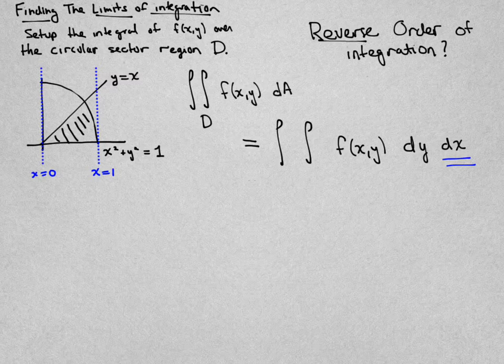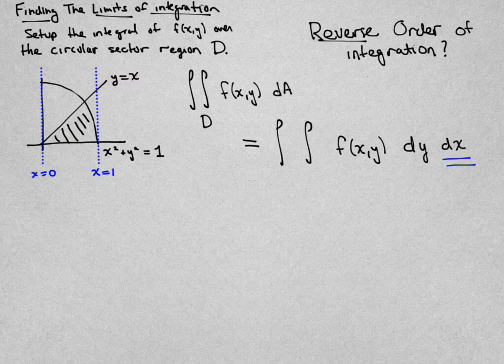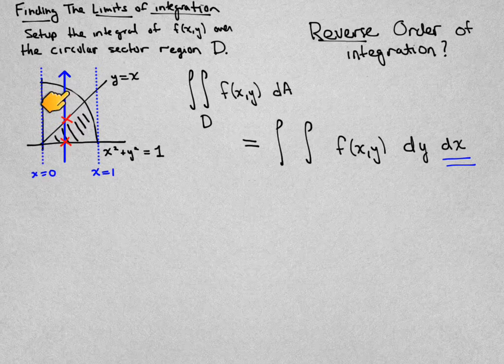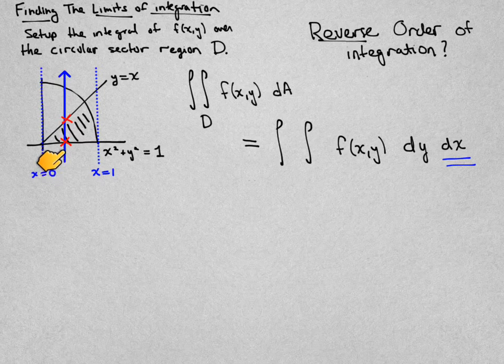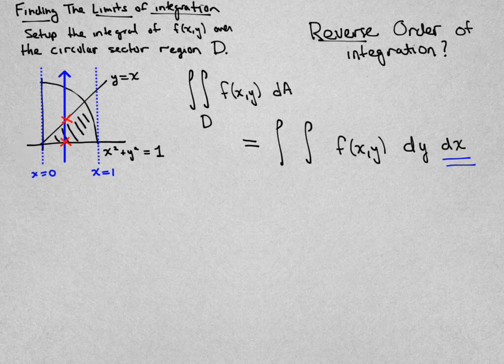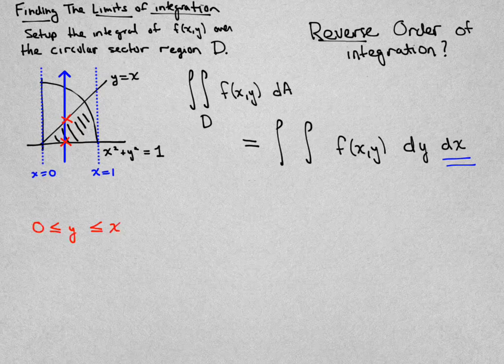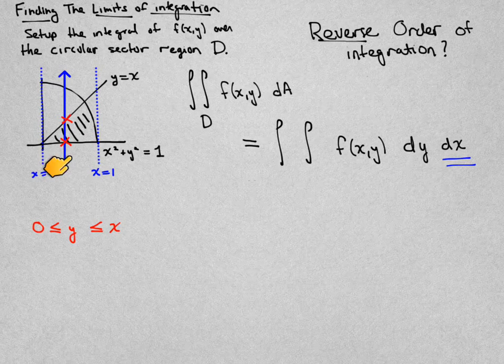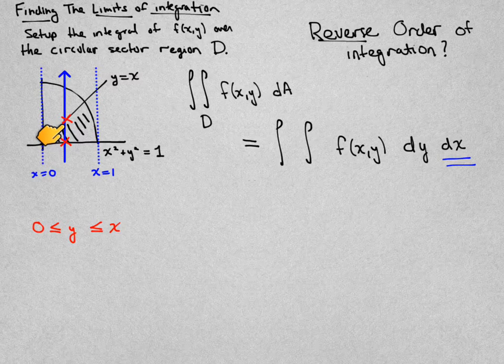However, now, what I want to do is think about a generic slice of this region, and the problem is, is over here I see one sort of slice where it enters along the x-axis and exits along the diagonal line here. And that says my y value should enter at 0 and exit at x.